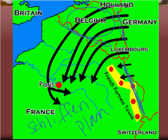Schlieffen died, different generals took over, and they went ahead with the plan but were fearful of leaving the entire eastern front open. They left a significant number of troops on the border with Russia, which weakened the German army enough that when it met the French army, they wound up in a stalemate. And because Britain was angry that Germany had violated Belgium's neutrality, this brought Britain into the war.